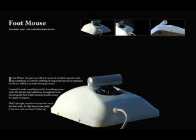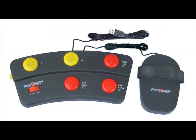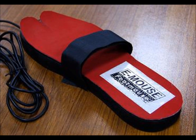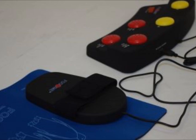A foot mouse can be used by a person who has limited or no use in their upper arms. The foot mouse can be used to navigate through software programs and select things in much the same way as a conventional mouse. Most foot mice consist of two segments: one segment is used to control the cursor and the second segment is used to click the mouse or to select shortcuts.